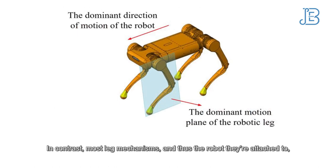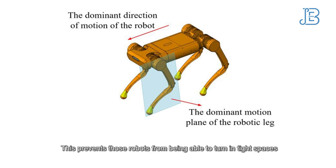In contrast, most leg mechanisms, and thus the robots they're attached to, have one single direction of motion. This prevents those robots from being able to turn in tight spaces.